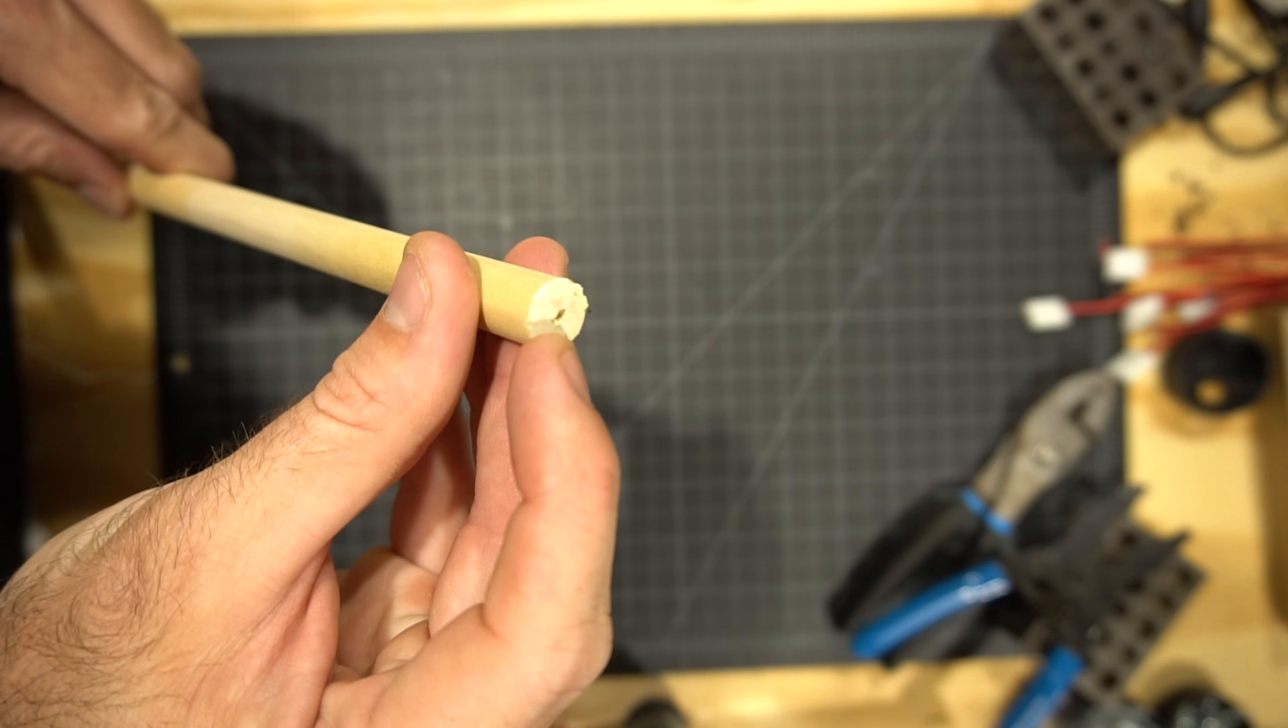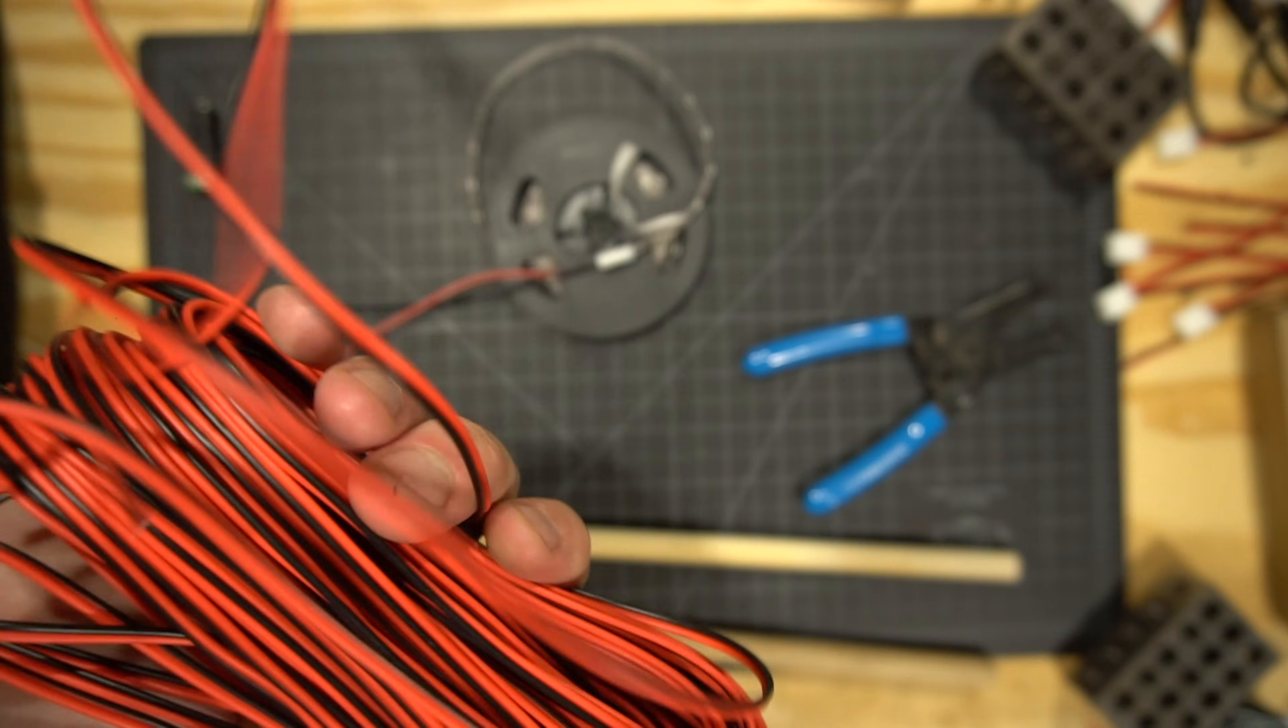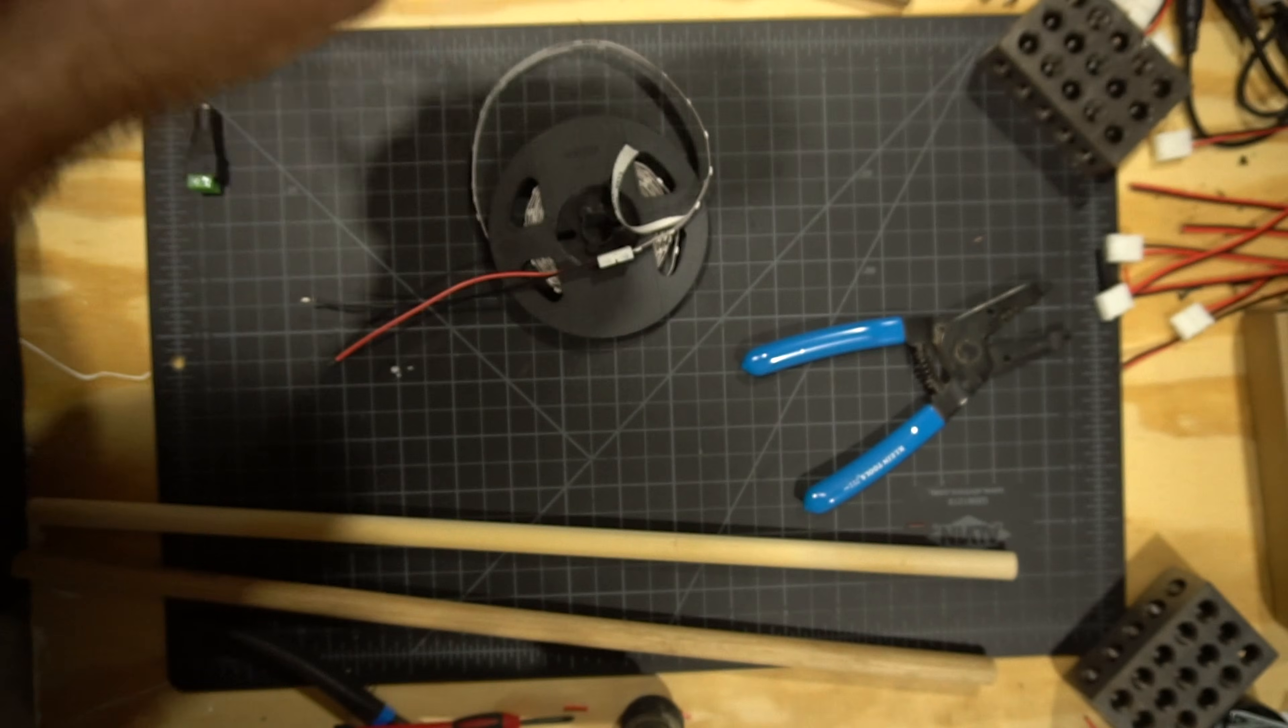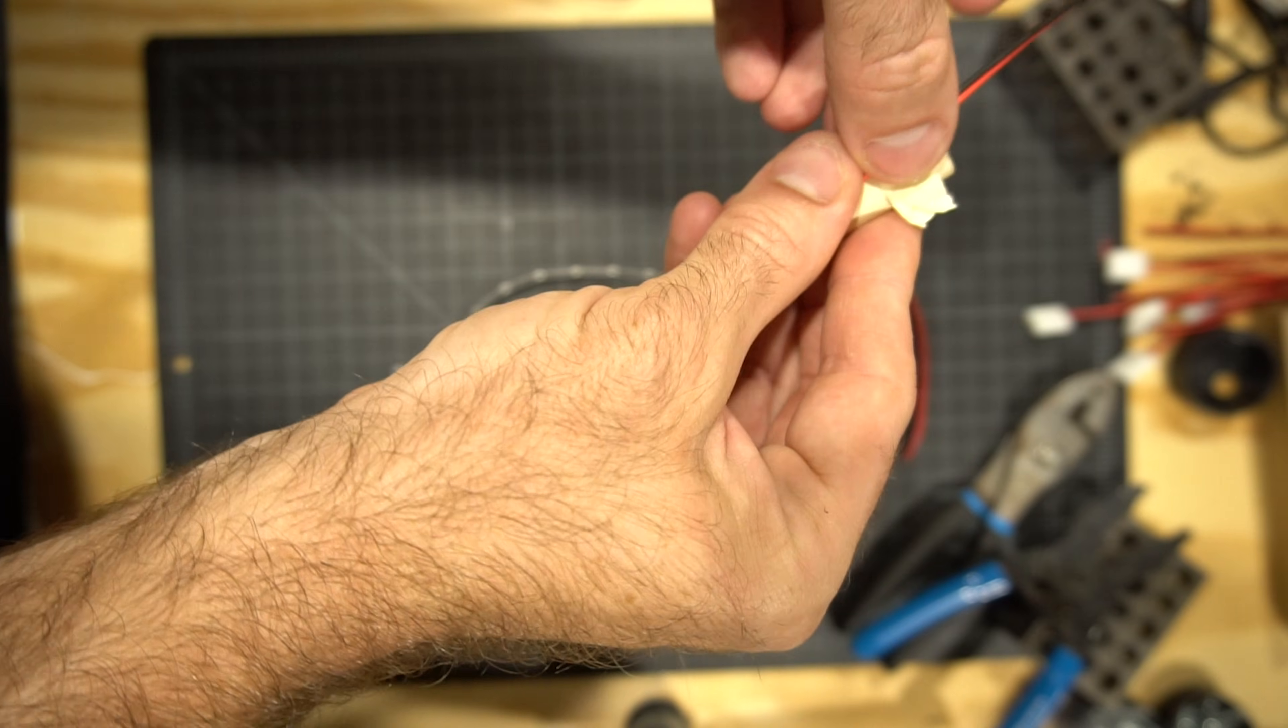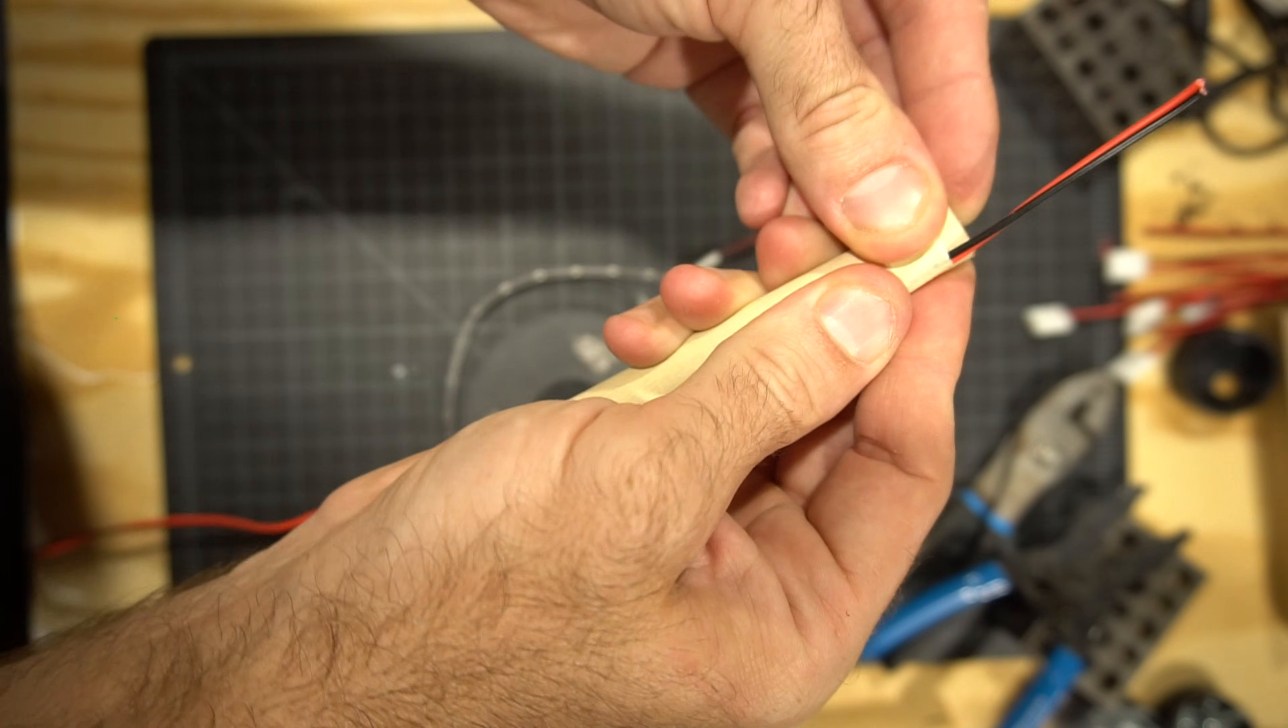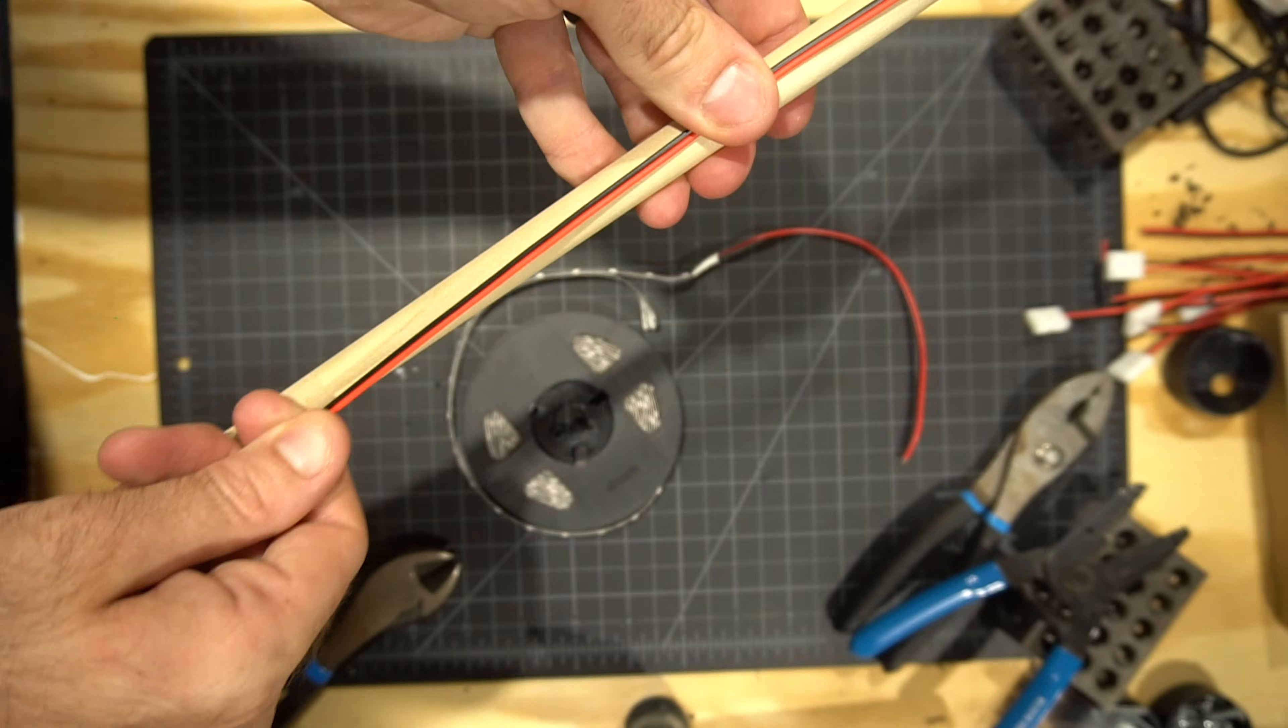Take your extra cord and cut a length several inches longer than your dowel rod. Tape one end to your dowel with a few extra inches of excess wire hanging out. I just used some masking tape that I had nearby. Make sure that the wire is flat against the dowel, it's tight, and then go ahead and tape that other end down too.